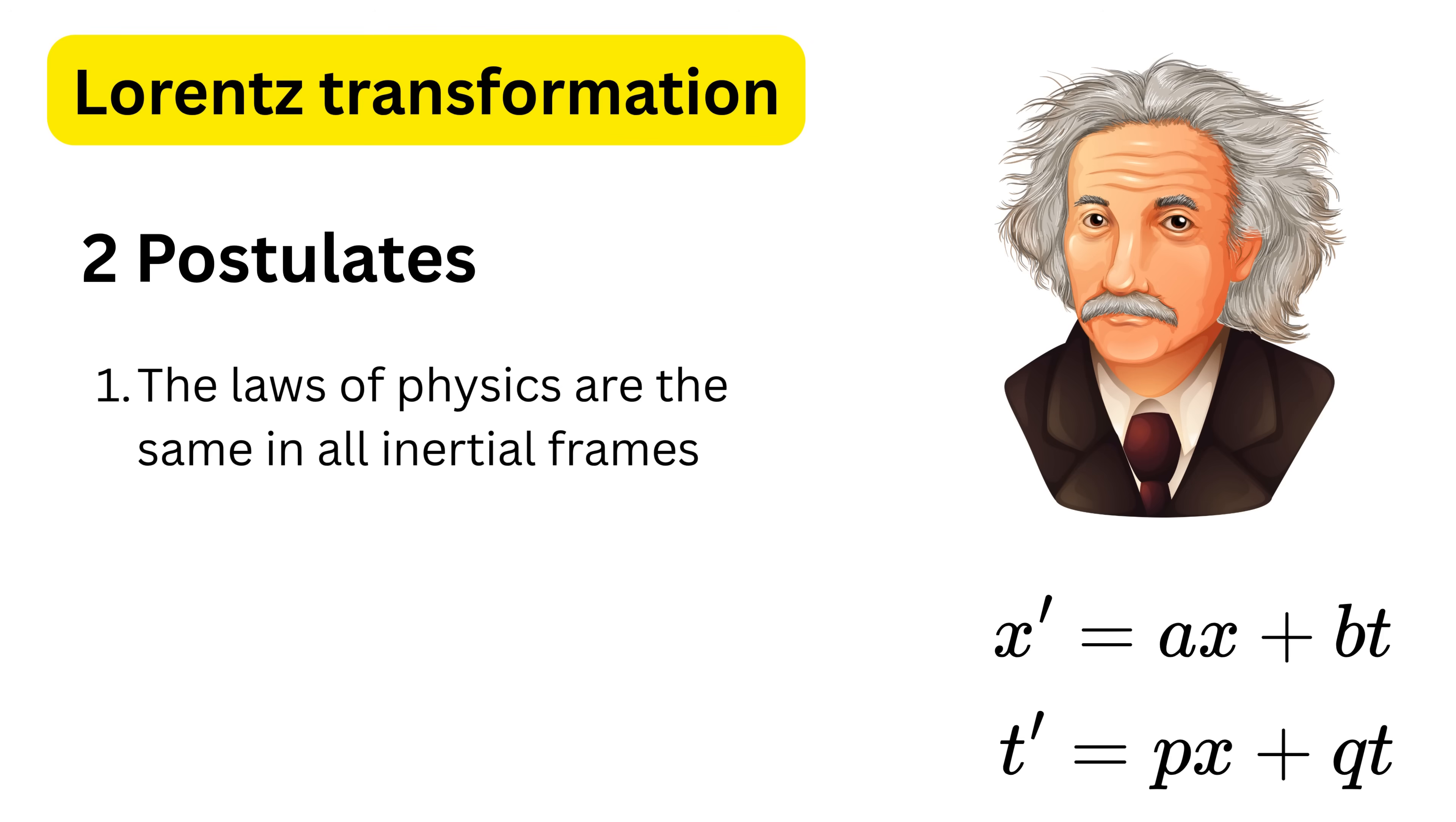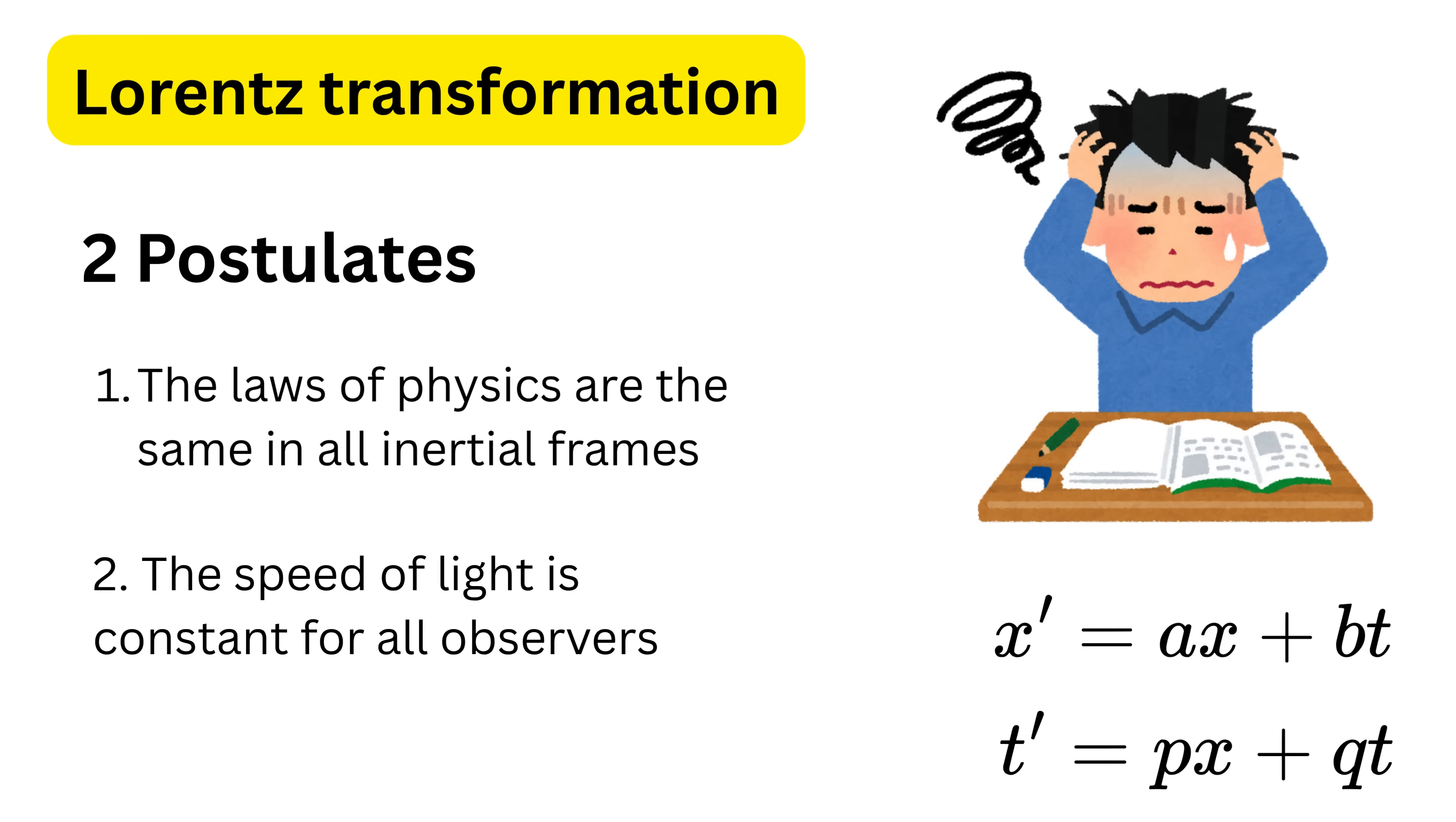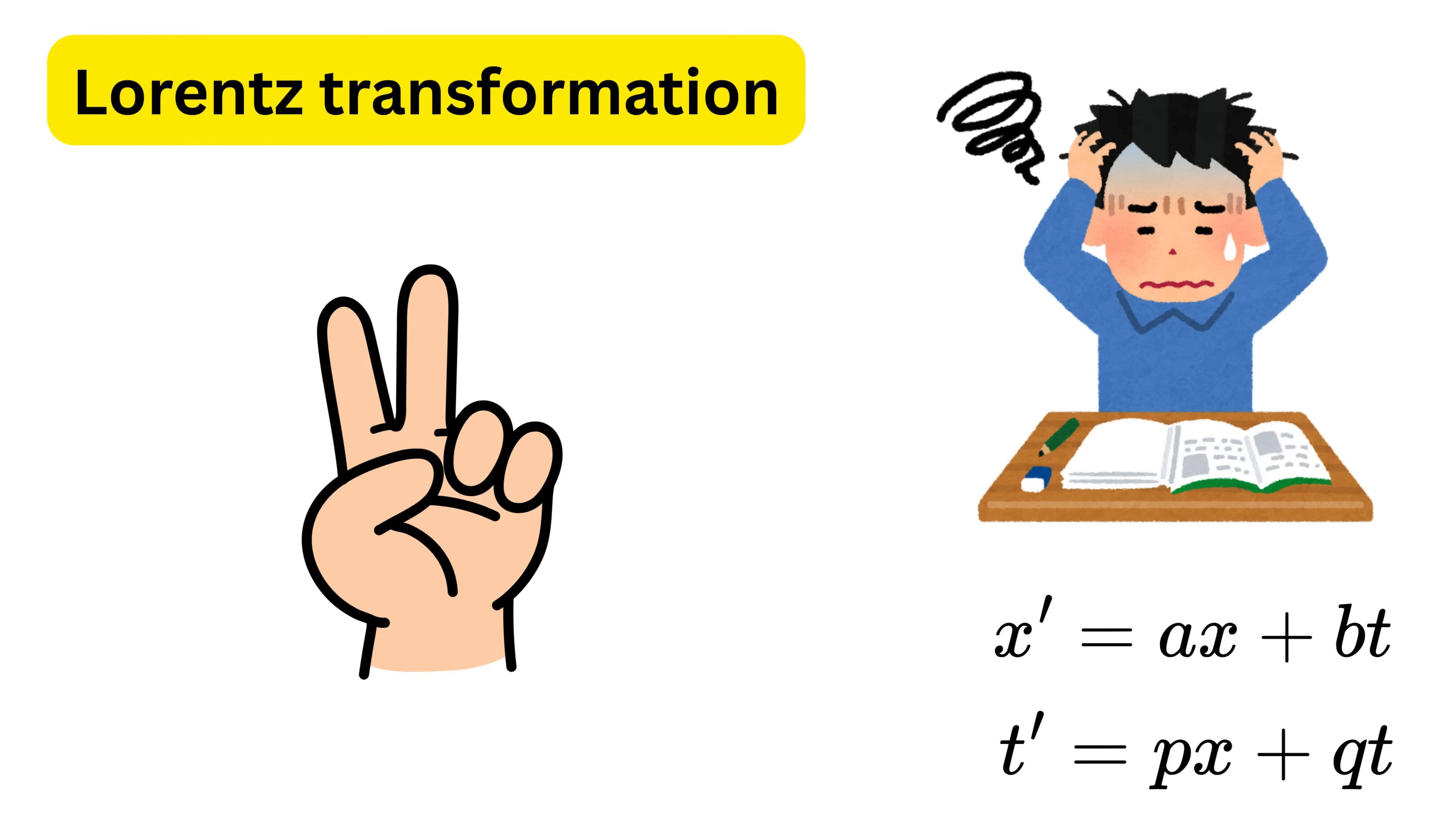First, the laws of physics are the same in all inertial frames. And second, the speed of light is constant for all observers. After doing some math, okay a lot of math, we arrive at these two equations.